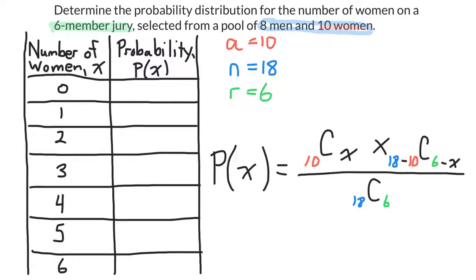So now I can figure out the probability for each possible number of women selected. I could have no women selected, one woman, two, three, four, five, or six women selected for the six-member jury.